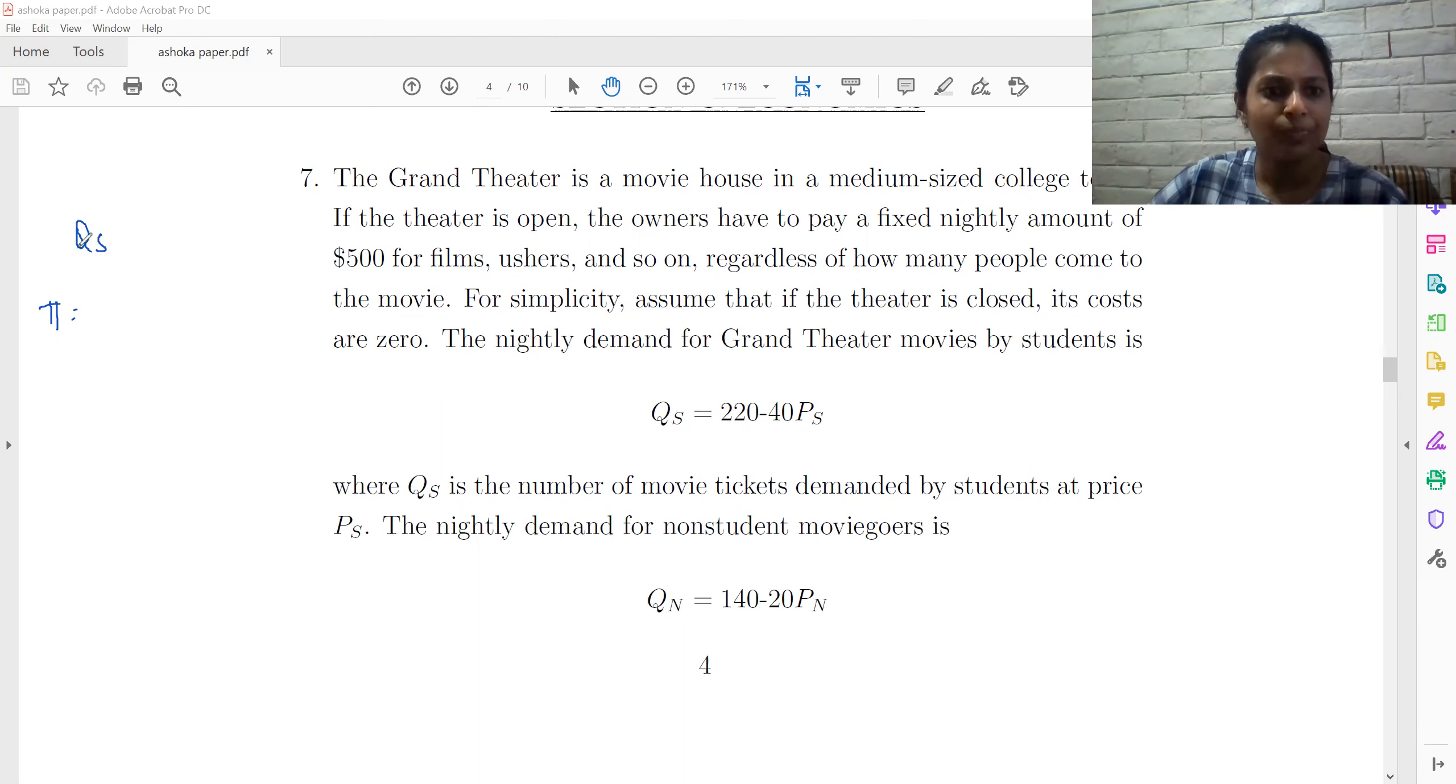So that means rewriting the demand function, we get PS is equal to 220 minus QS by 40. So profit is going to be PS into QS, which is going to be 220 minus QS by 40 into QS.